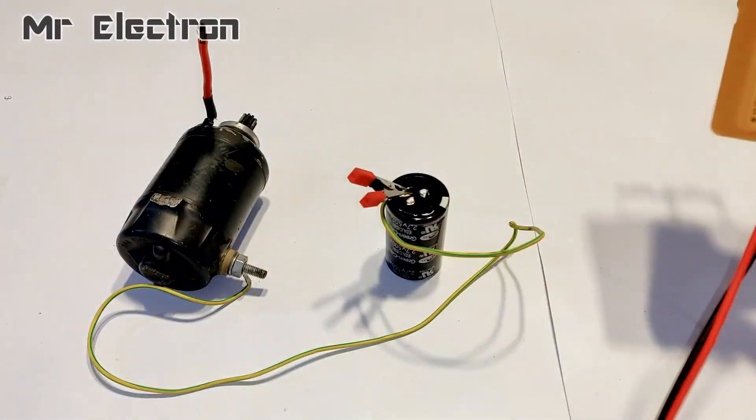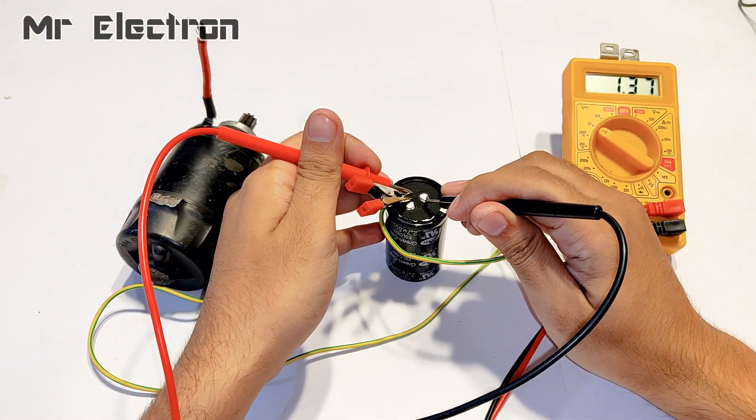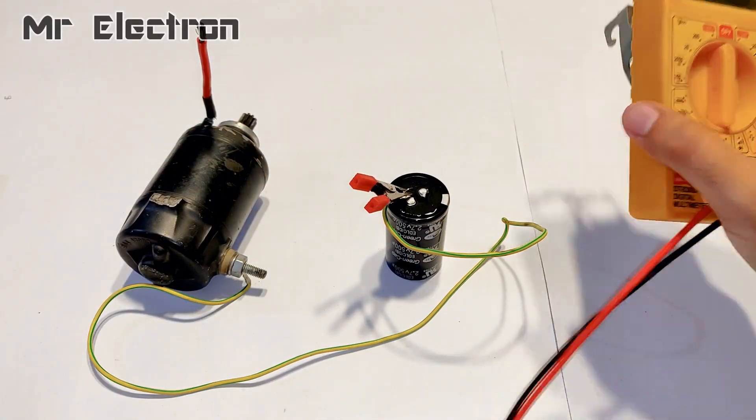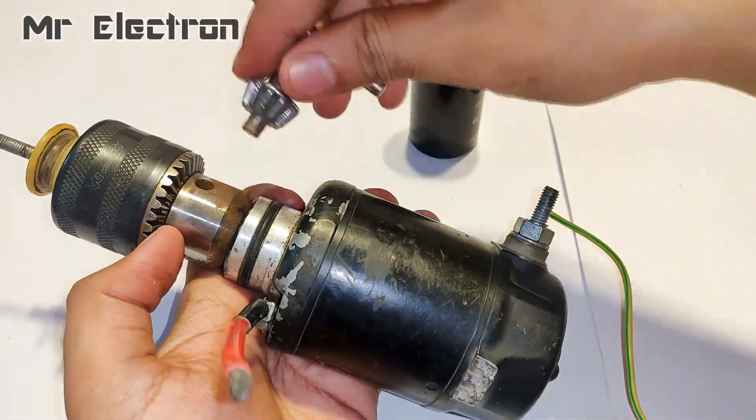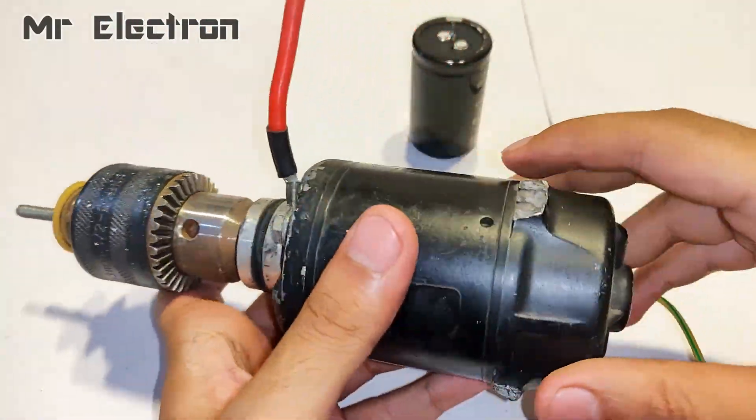Now guys here I am going to measure the volts left on this capacitor after such heavy usage. As you can see it is still 1.37V which is pretty good. And now I am going to connect this drill chuck to the shaft of this starter motor so that its rotation is visible better than it was previously.